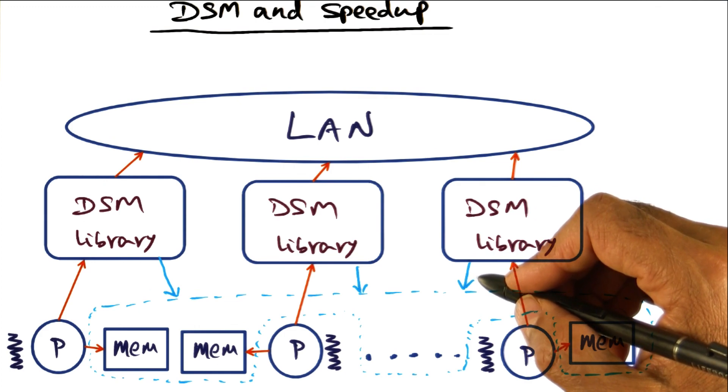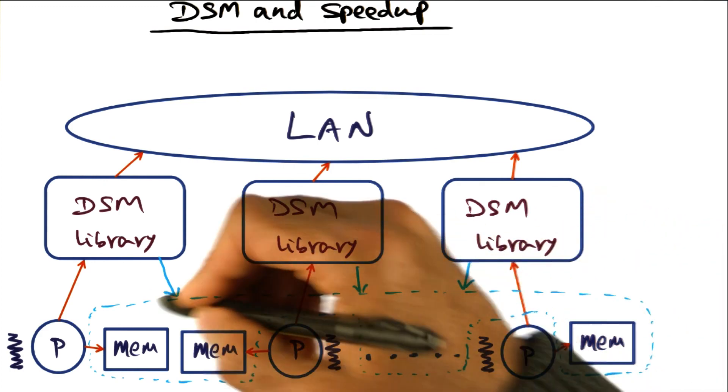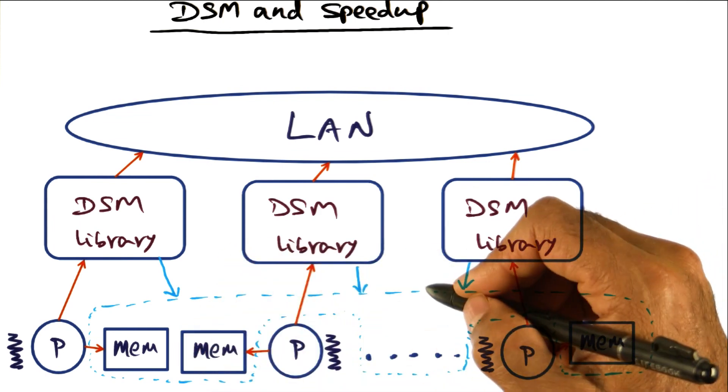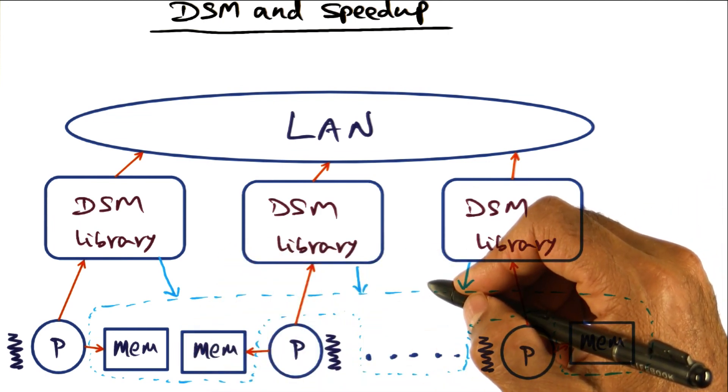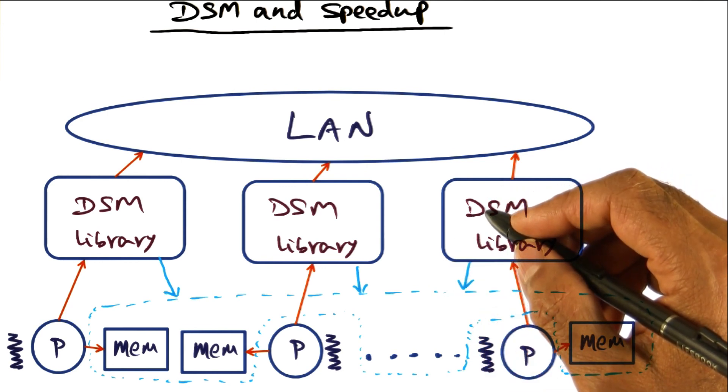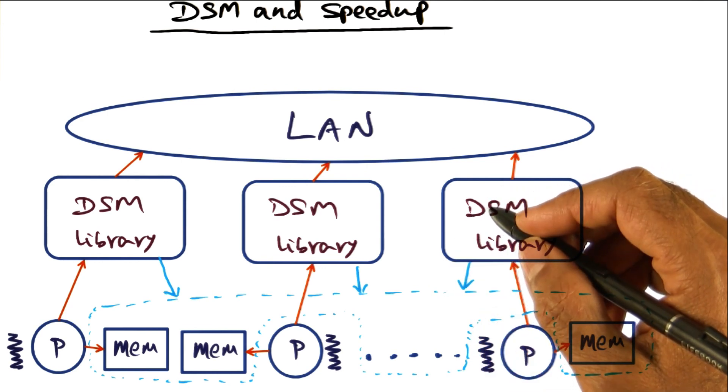But such speed up is not automatic. If the sharing that we're doing, even though DSM gives you the ability to share memory across the network, recall what our good friend Chuck Thacker told us: shared memory scales really well when you don't share memory.